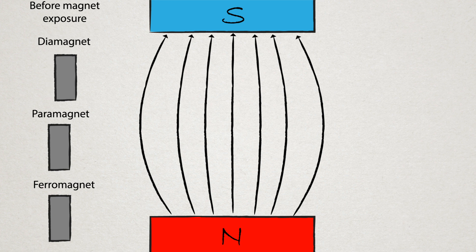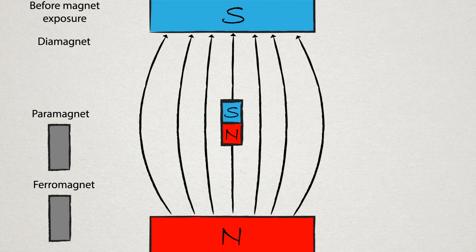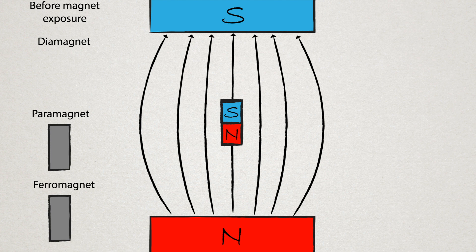However, when diamagnetic materials are exposed to an external magnetic field, these electrons perturb their magnetic field from the orbit, such that the current loops that are generated by the electrons produce a magnetic field that is opposing to the externally applied magnetic field.